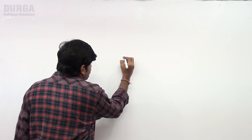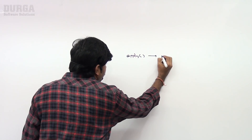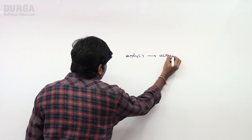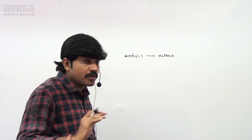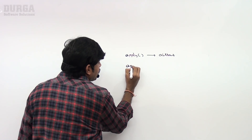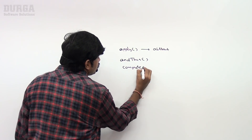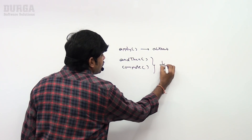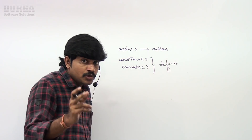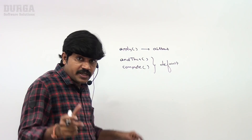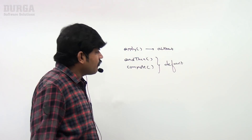By now, everyone should be aware that the Function interface contains an abstract method: apply. The first method is apply, which is the abstract method available inside the Function interface. Next, there are two default methods: andThen and compose. These two default methods are present inside the Function interface to implement function chaining.